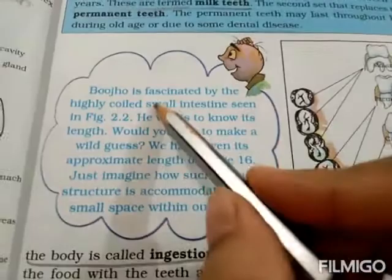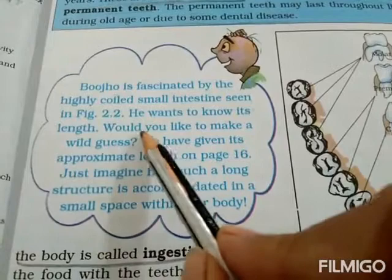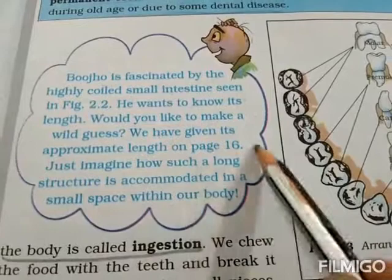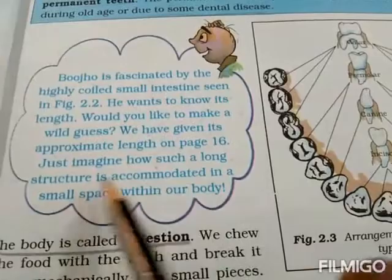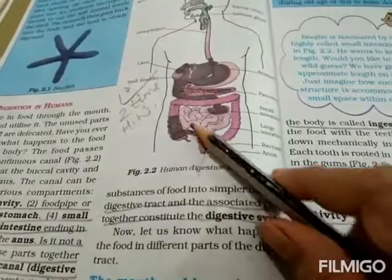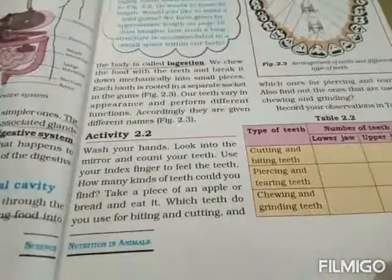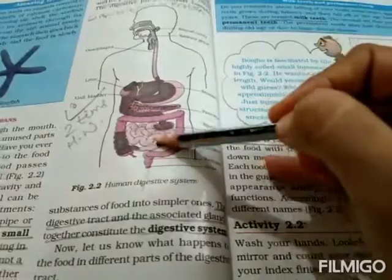Bujo is fascinated by the highly coiled small intestine seen in figure 2.2 and wants to know its length. Just imagine how such a long structure is accommodated in a small space in your body — it can be up to 2 meters long, coiled up inside your abdomen.